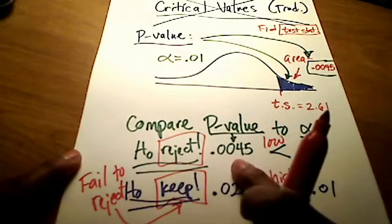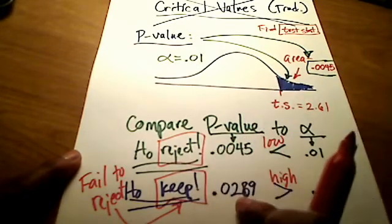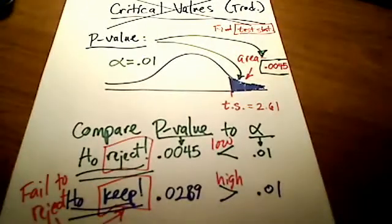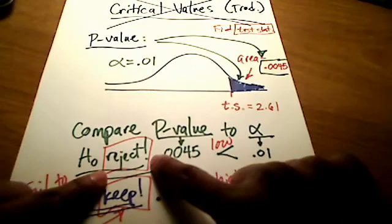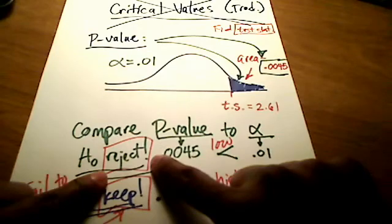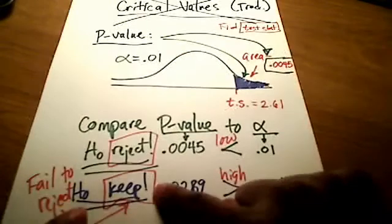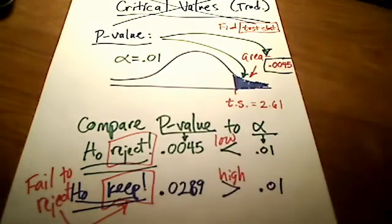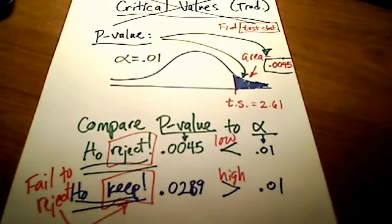If we reject the null hypothesis, what we're in essence saying is we support the claim of the alternative hypothesis. If we keep the null hypothesis, what we're in essence saying is this may be true, therefore we don't have enough evidence to support our claim. So the wording of this is pretty tricky, but this is how p-value testing works.